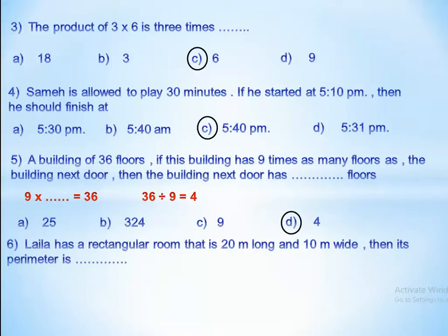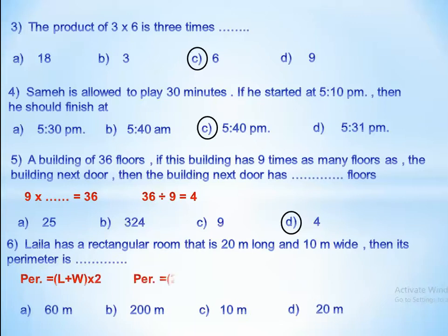Layla has a rectangular room that is 20 meters long and 10 meters wide. We need the perimeter. We know that perimeter equals (length plus width) times 2, which equals (20 plus 10) times 2, equals 30 times 2, equals 60 meters.